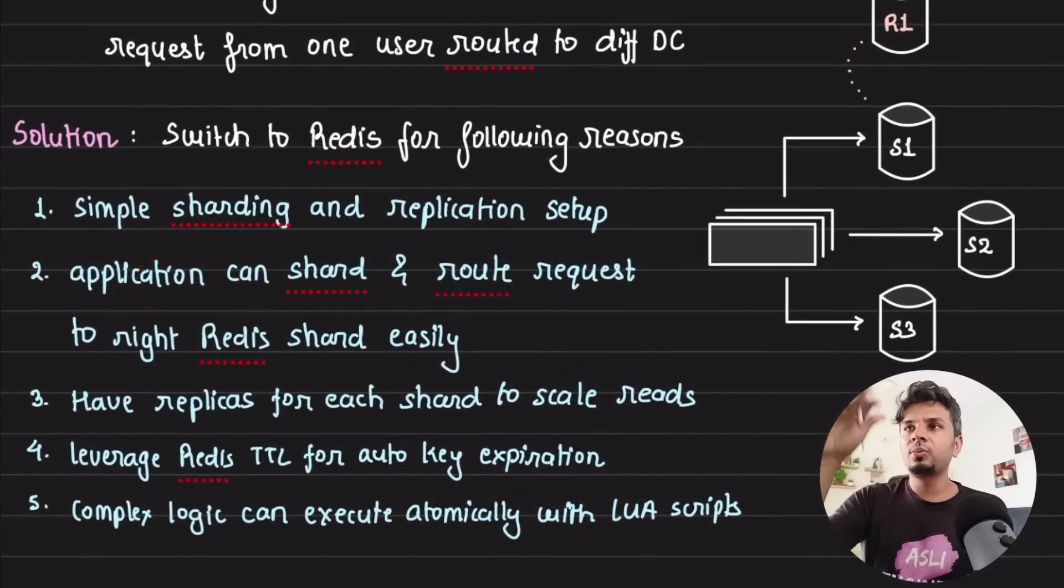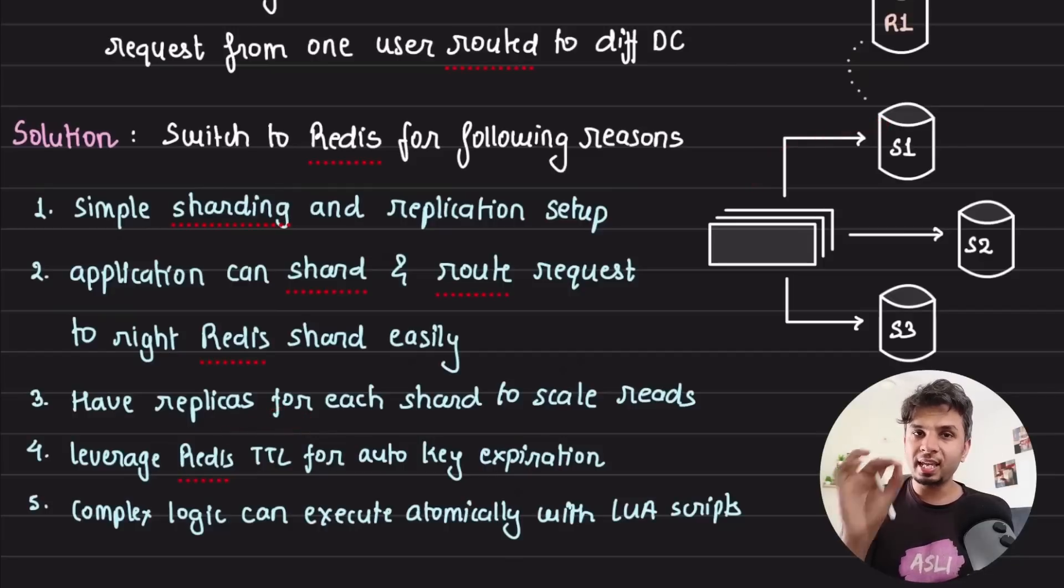Third reason is, because Redis makes it very easy to create replicas out of master nodes, they can have replicas for each shard to handle large amounts of reads. Because remember, for every single API request that comes to GitHub, you need to check for rate limits. So given that it's a very read-heavy use case, having an easy way to create read replicas out of data nodes or database nodes makes your life very easy.